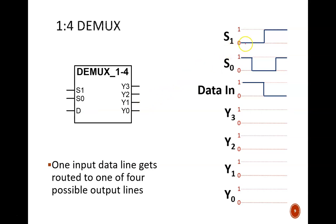At the start, the select code 01 indicates that Y1 is the chosen output line. The data input is high, so Y1 receives that high signal. All other non-selected outputs are low.